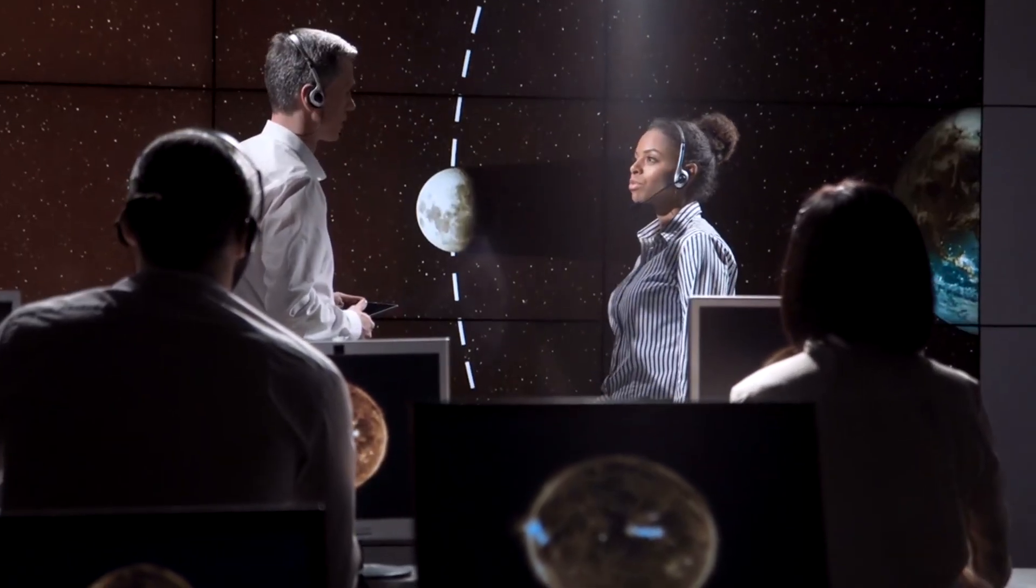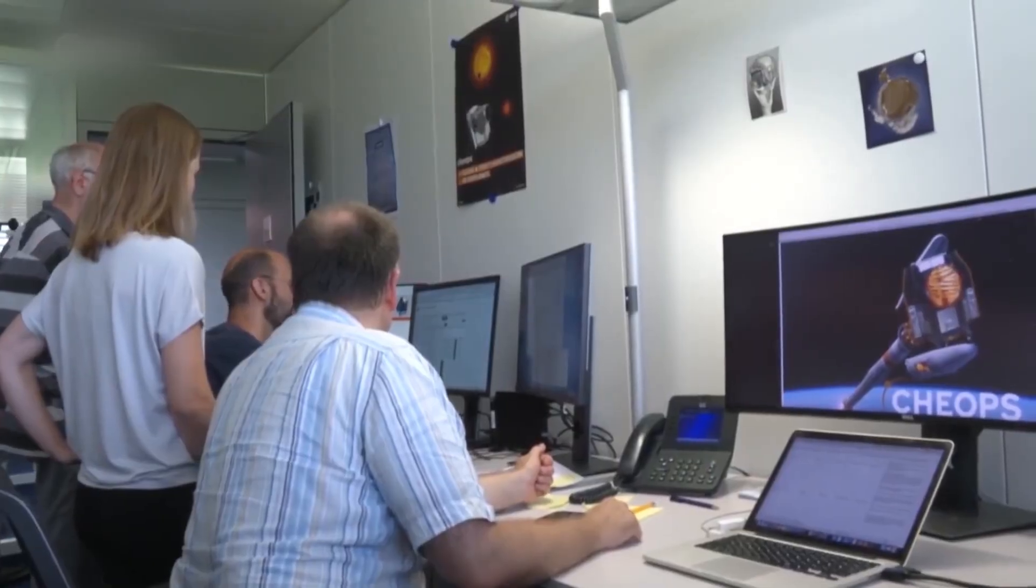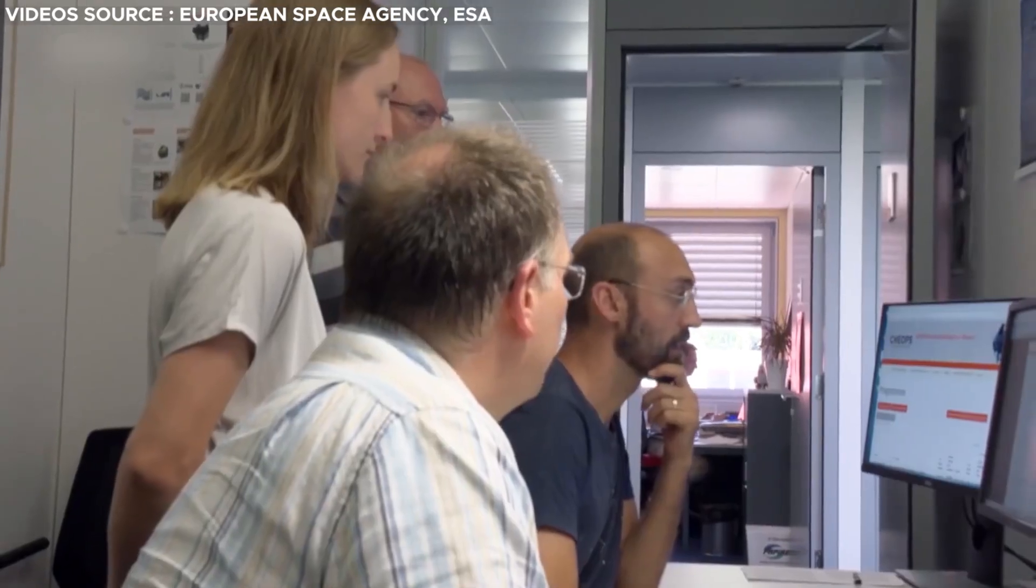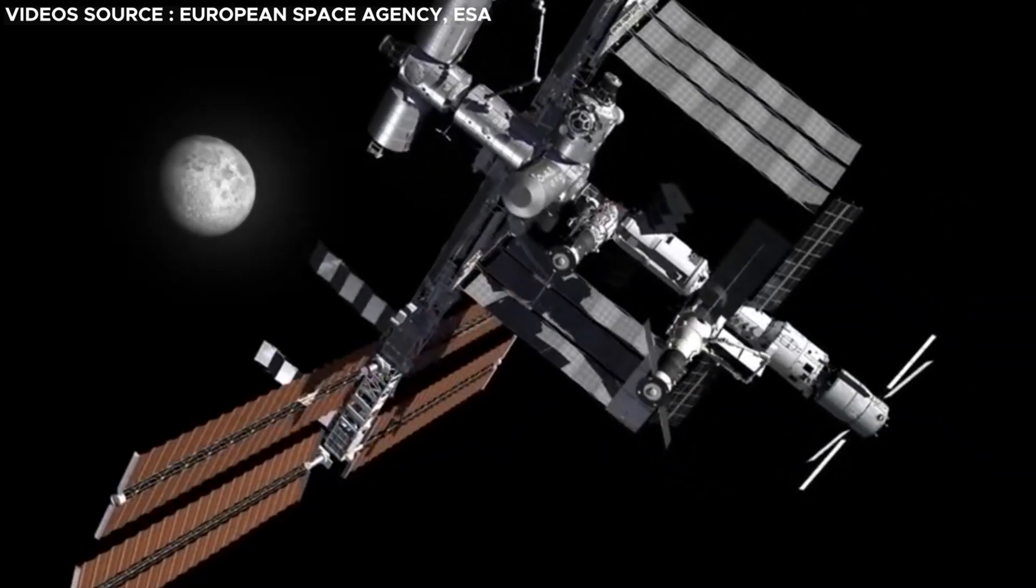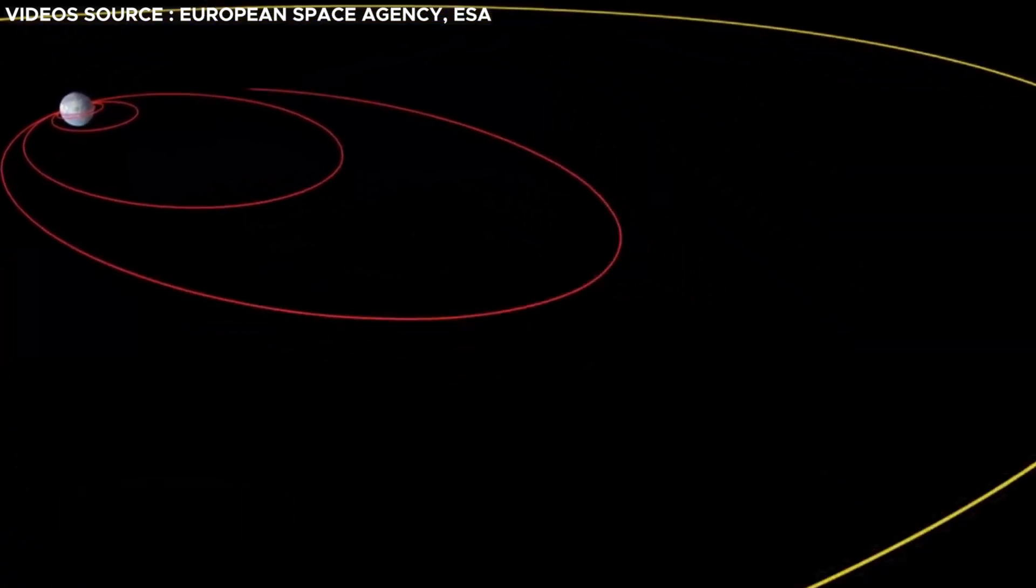This phenomenon has intrigued scientists for many years, and the underlying reasons are fascinating. Today, let's delve into this phenomenon and uncover what will happen to Earth when the moon has moved away too far.